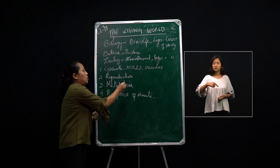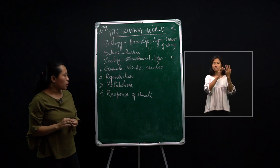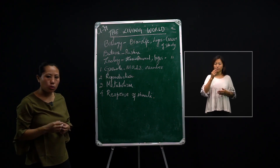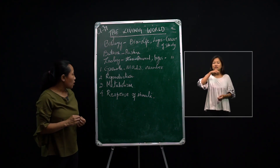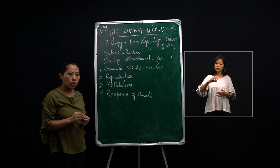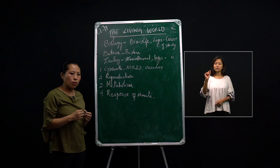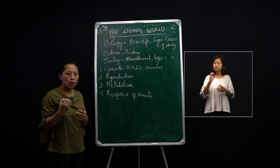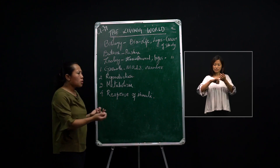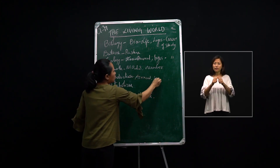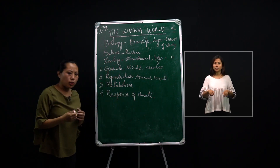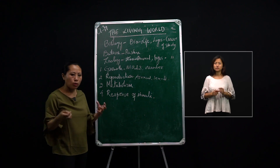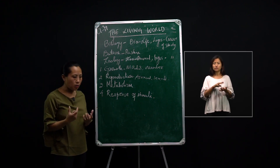The next feature of living organisms is reproduction. Reproduction is a biological process by which parents give rise to young ones or offspring. It is one of the most important characteristic features of living organisms, enabling them to perpetuate the species. There are different kinds of reproduction: asexual reproduction, which takes place by means of spores, fragmentation, budding, etc., and sexual reproduction, which takes place by means of fusion of male and female gametes — egg and sperm.